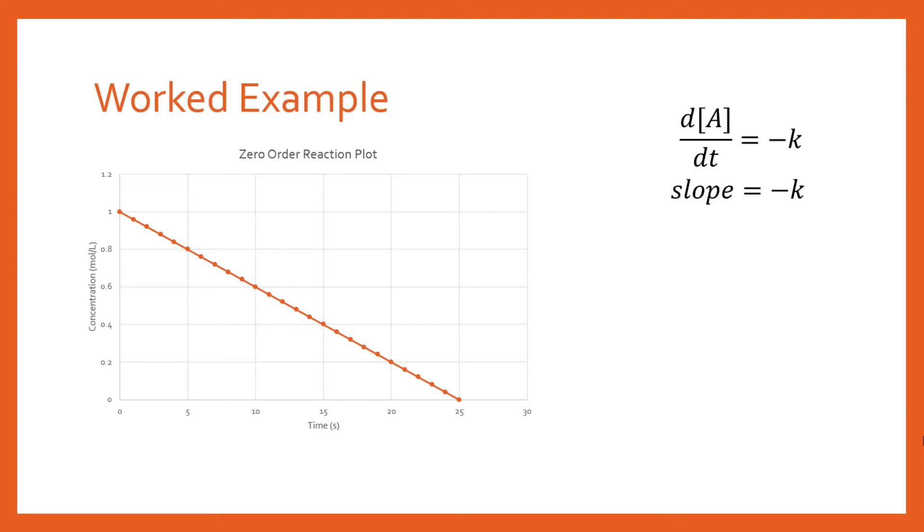From this we can say that the slope of this line equals minus k, because the derivative is constant the whole time. It's not a changing derivative like it would be with higher order reactions. Since we have a perfect straight line, the slope is simply the gradient, which simplifies things considerably.